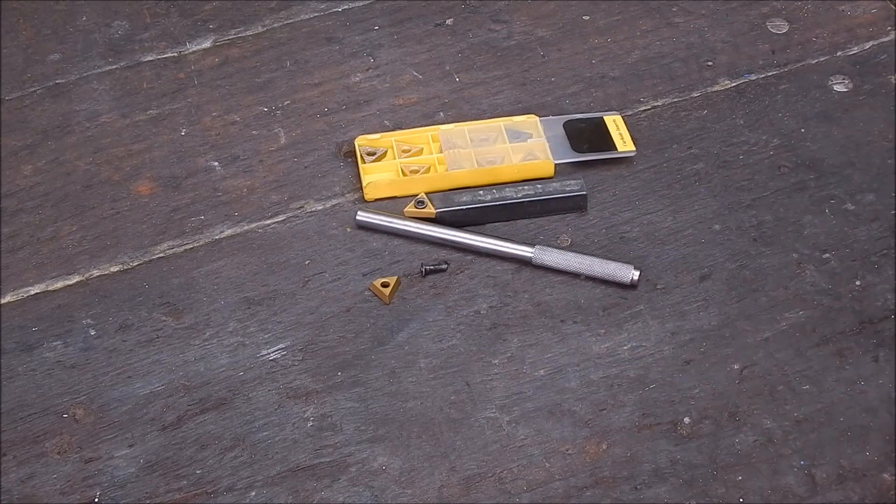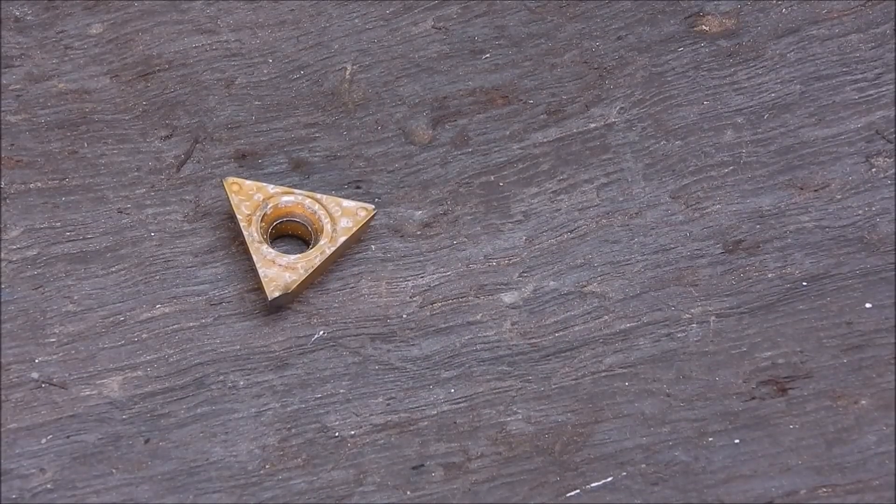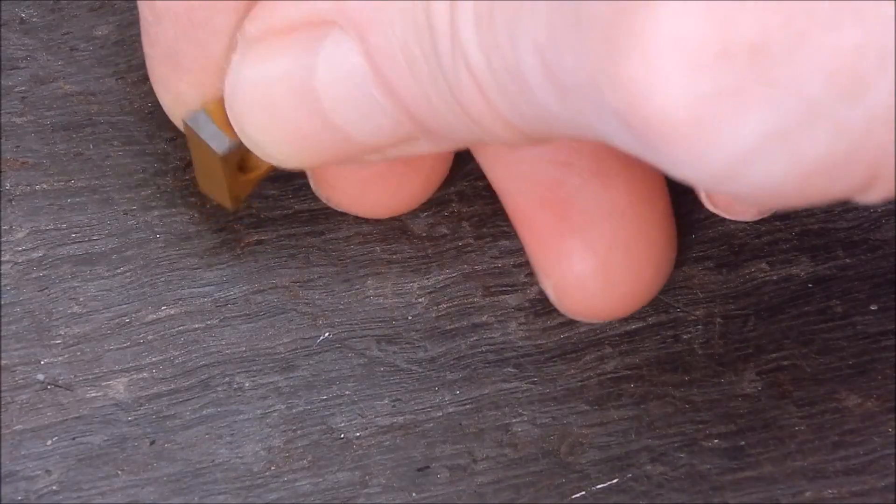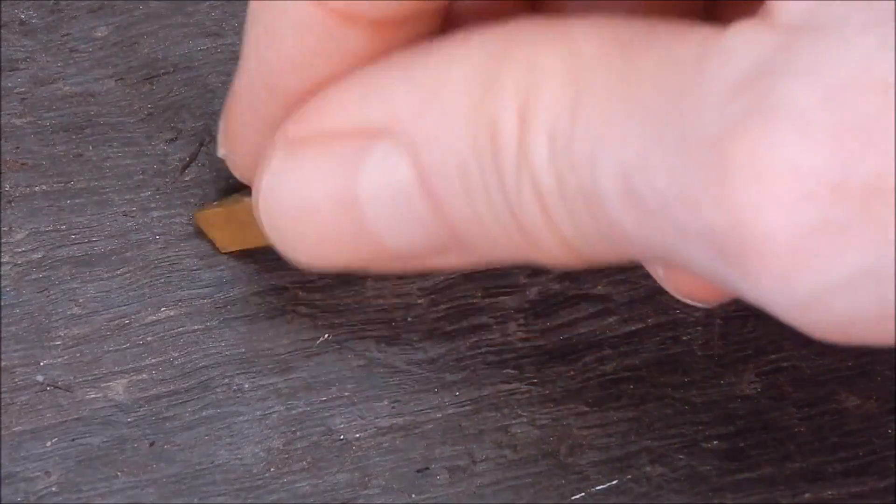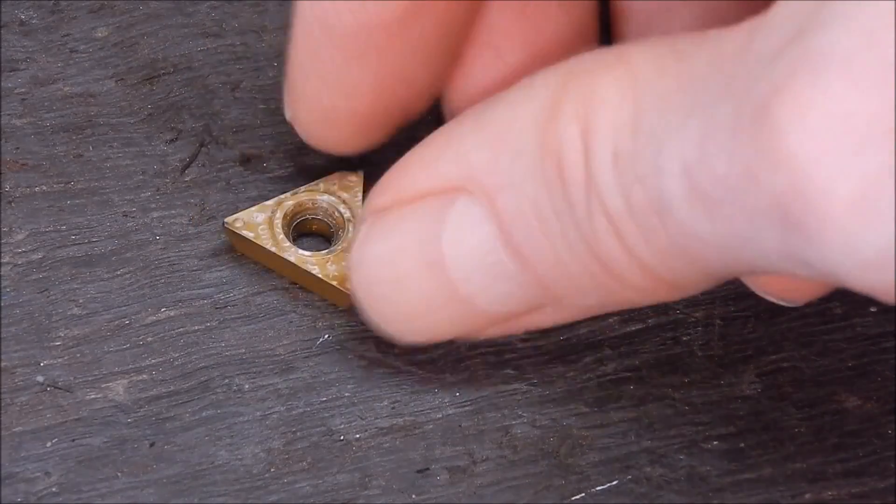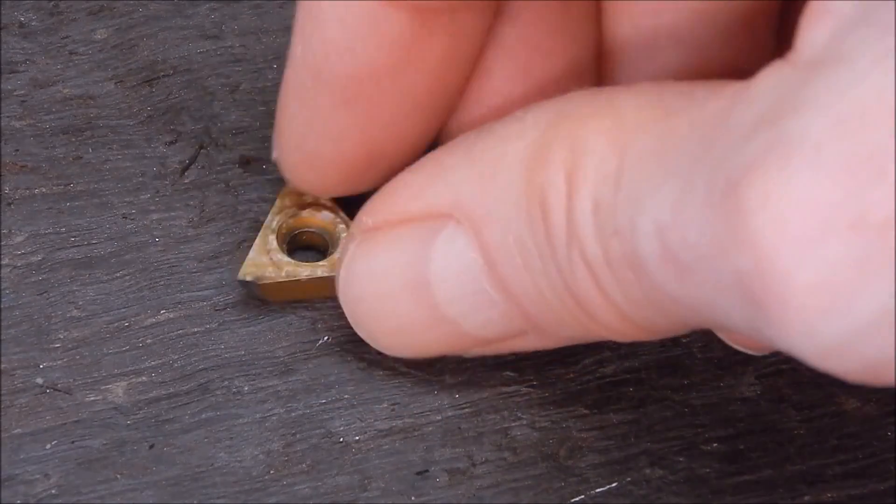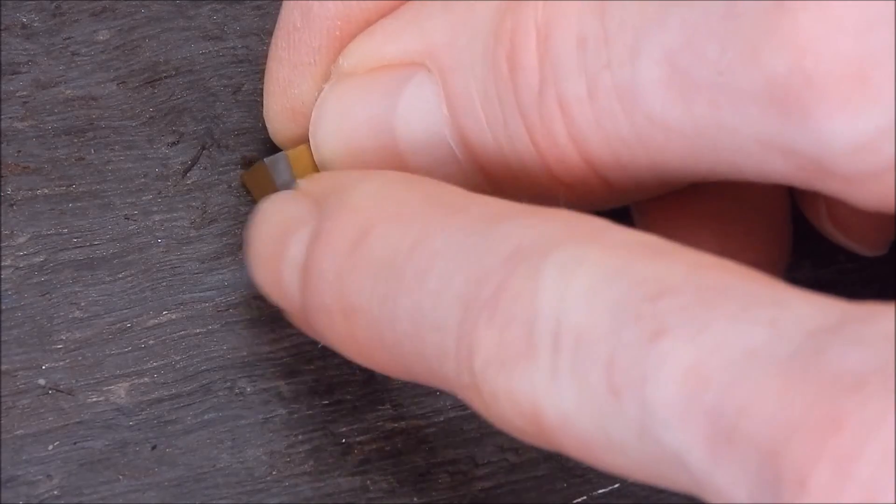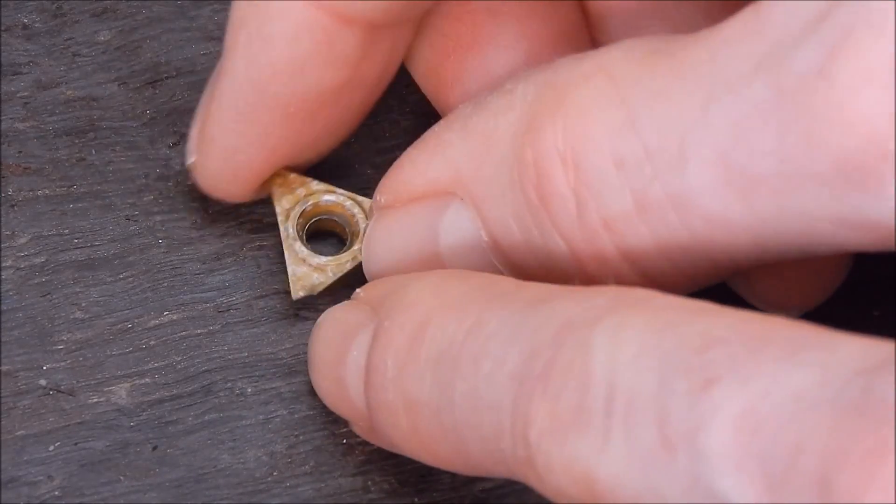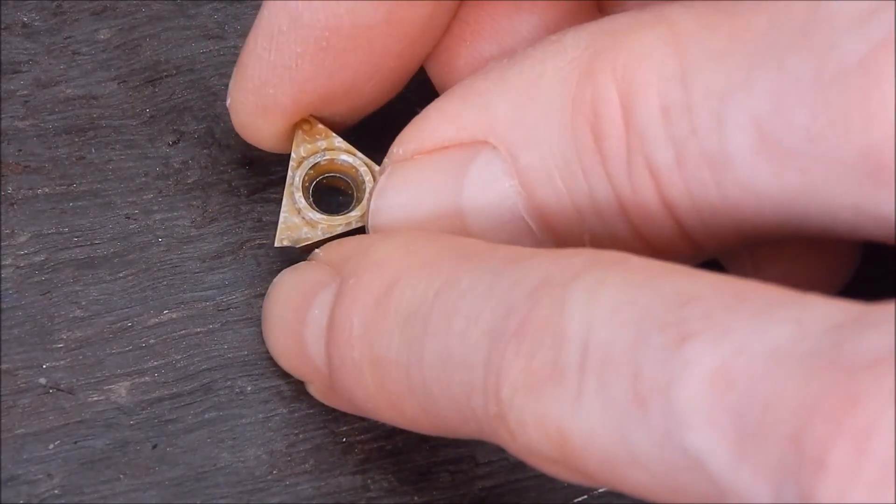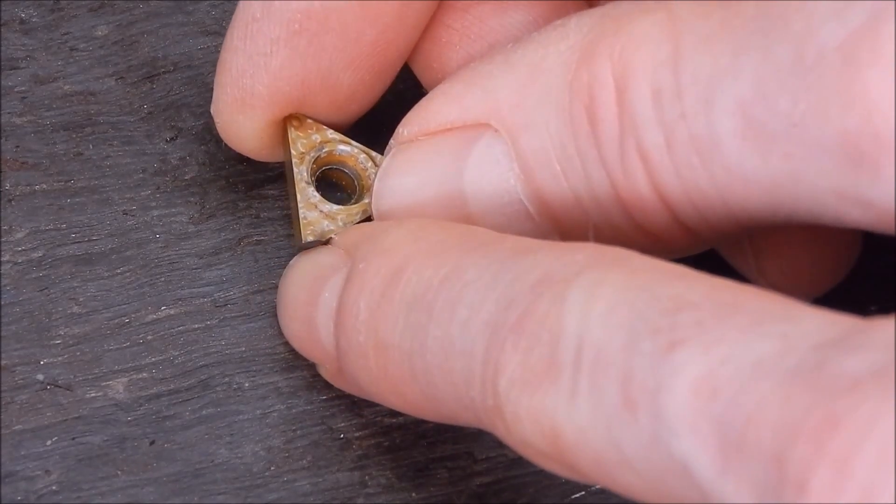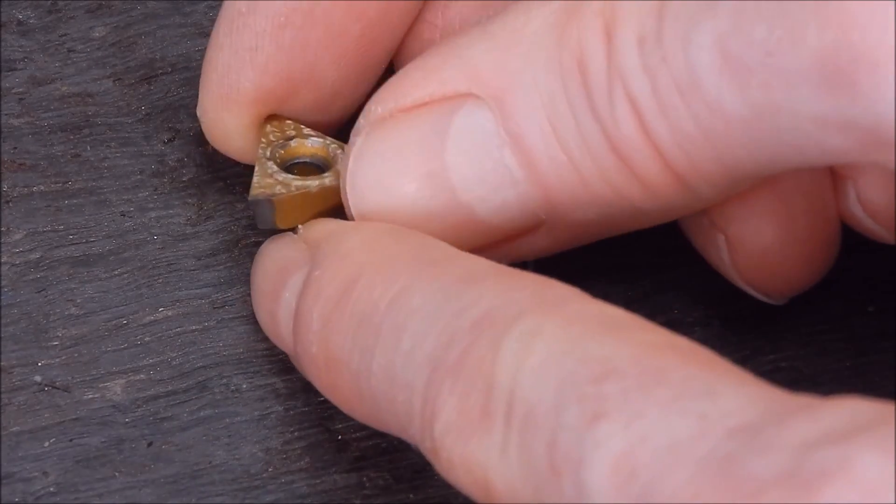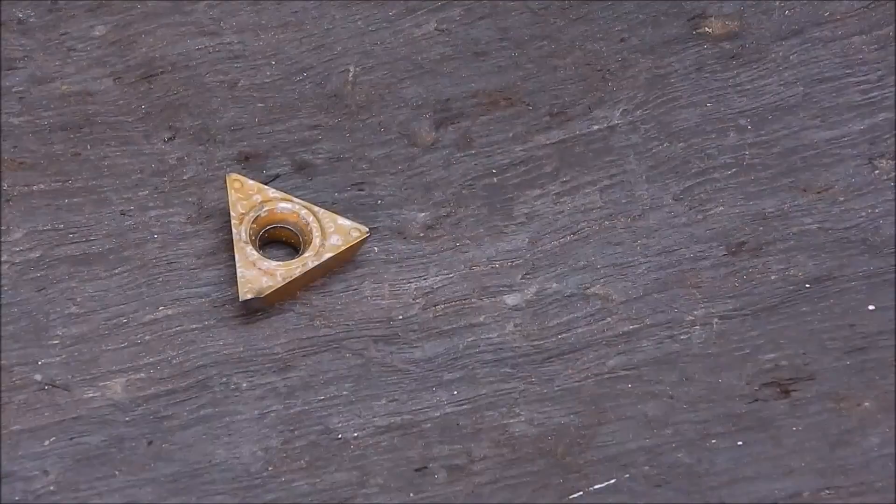This one here. Here's a good example of an insert that could be ground back. It's had a chip taken out of that point, got two still unused. So what I'll do is I'll just grind a flat on that side where the chip is and that will retain a lot of that profile, just round the corner off a little bit and it should be reusable. Let's see how it comes up.